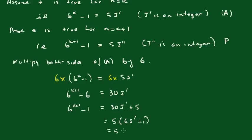Which equals 5j double dash, where j double dash equals 6j dash plus 1. This is being an integer, therefore this must also be an integer.